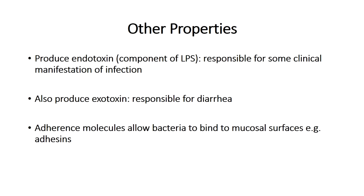These structures do what their names suggest — they allow the bacteria to adhere to the epithelial surfaces of, say, your bladder, causing cystitis or a renal tract infection. That is one example of how fimbriae and adhesins allow the bacteria to carry out disease.